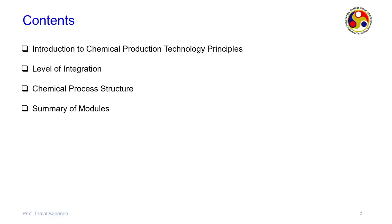What we will cover in this particular lecture is the introduction to chemical production technology principles. I chose the word 'production' instead of 'process' because as chemical engineers, what we are doing is converting raw material to some useful or value-added form. So it is always production which is going on — the process is a part of the production. Then we will see what are the levels of integration.